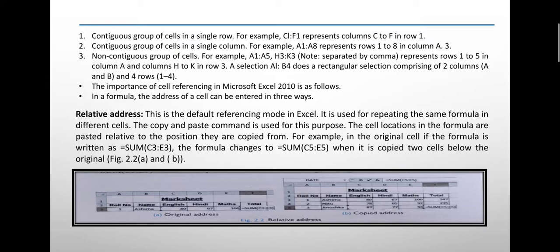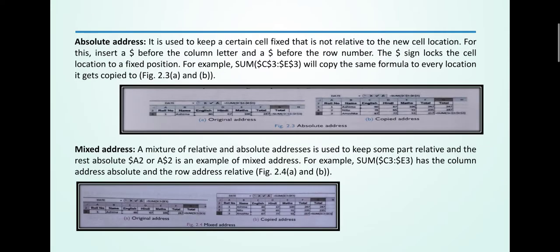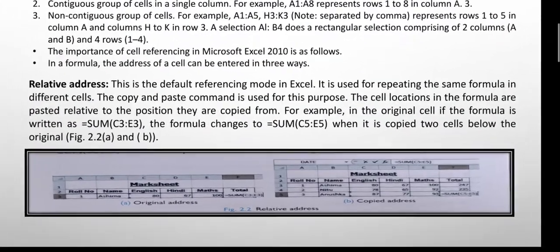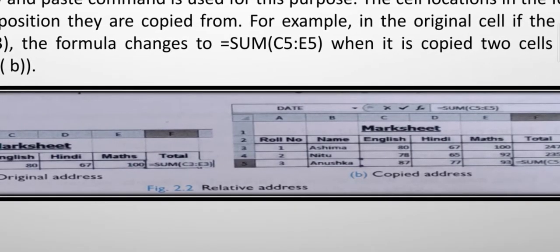Continuous group cells: single row, single column. For example, C1 to F1 represents columns from C to F. C to F. Next, A1 to A8 represents rows 1 to 8.